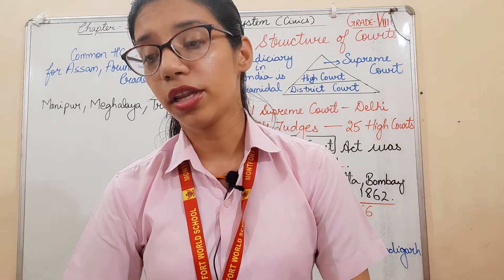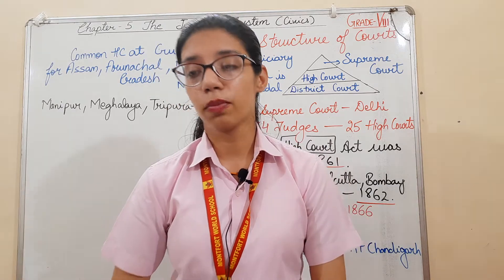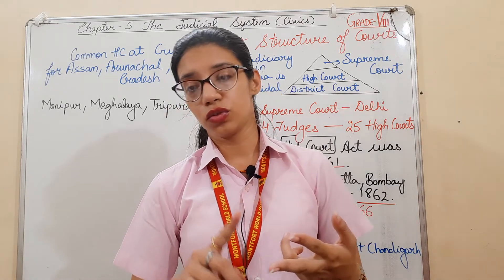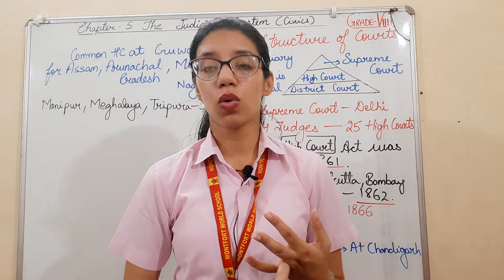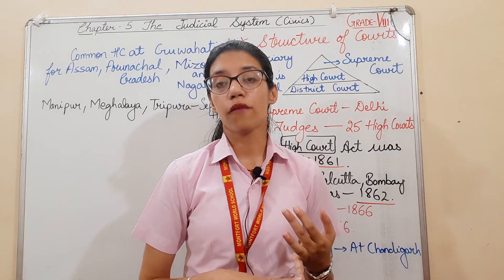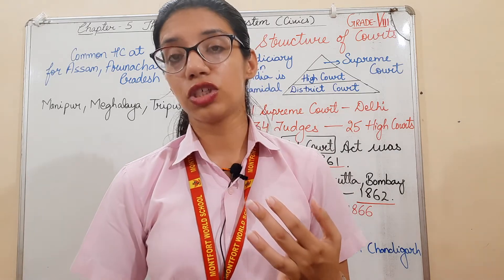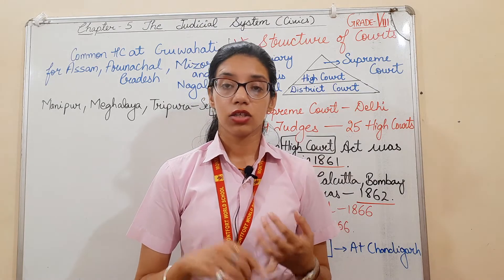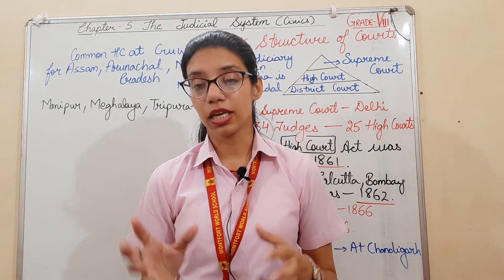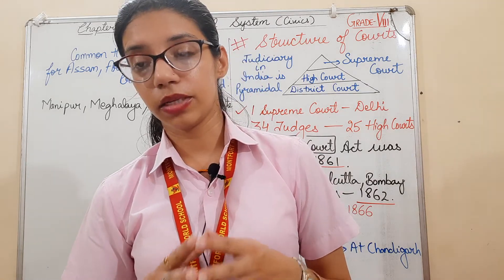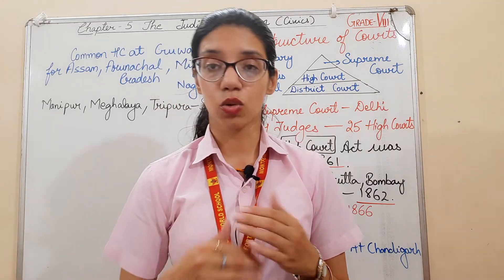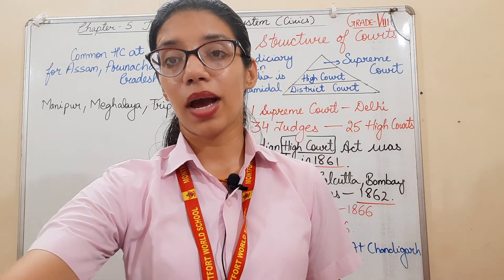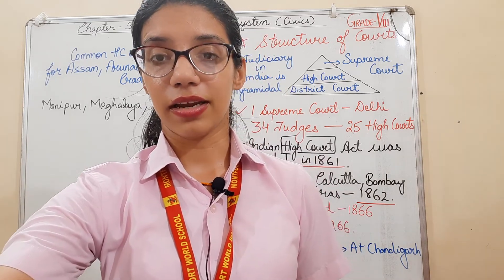The lower or subordinate courts are known by various names: Trial Court, Court of District Judge, Sessions Court, Court of Chief Judicial Magistrate (CJM), or Metropolitan Magistrate. These are the names for your district-level lower courts. Thank you and have a nice day ahead.